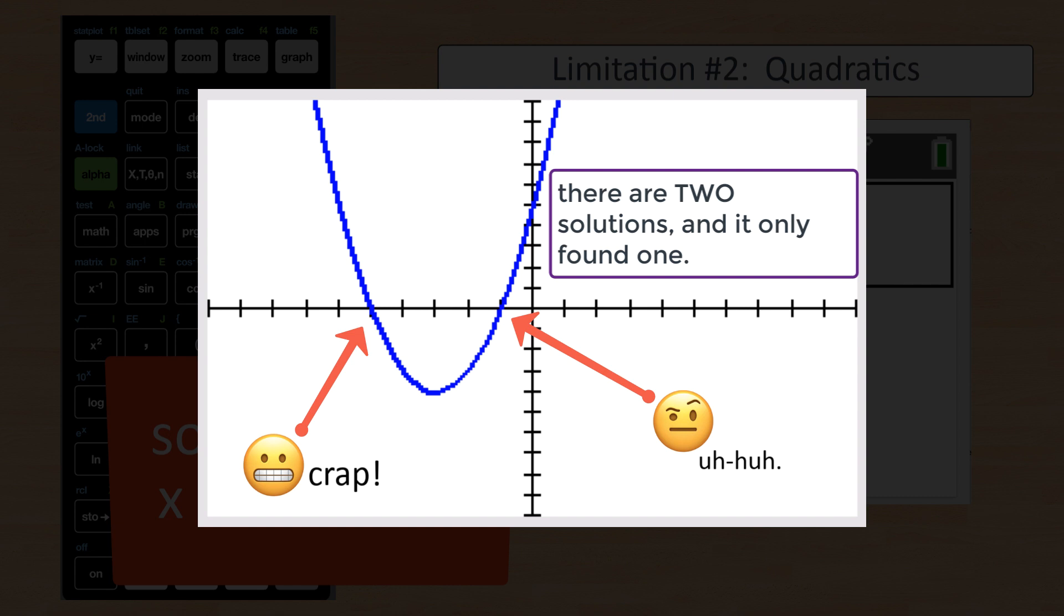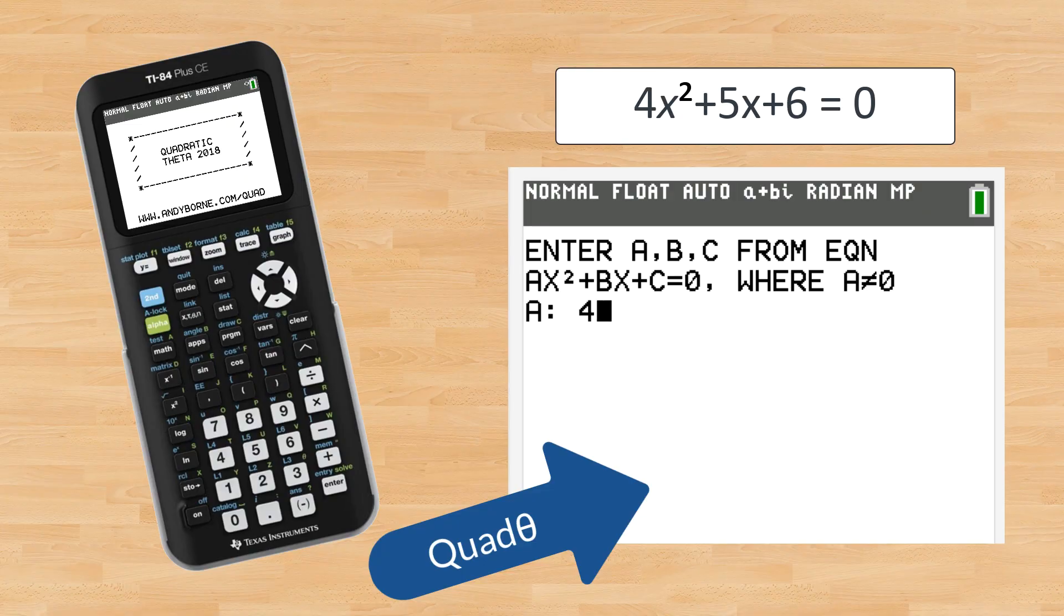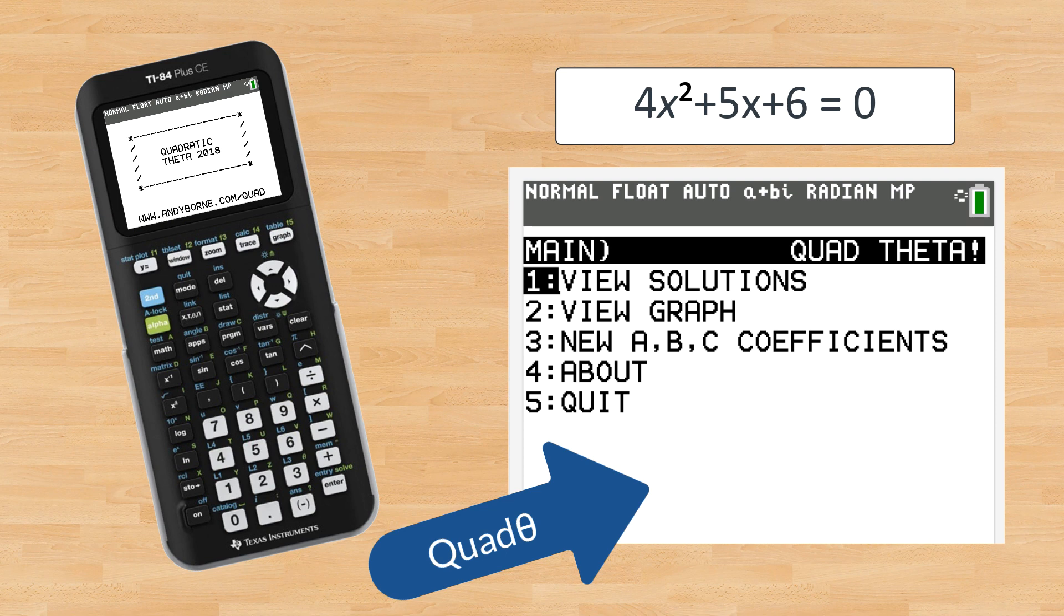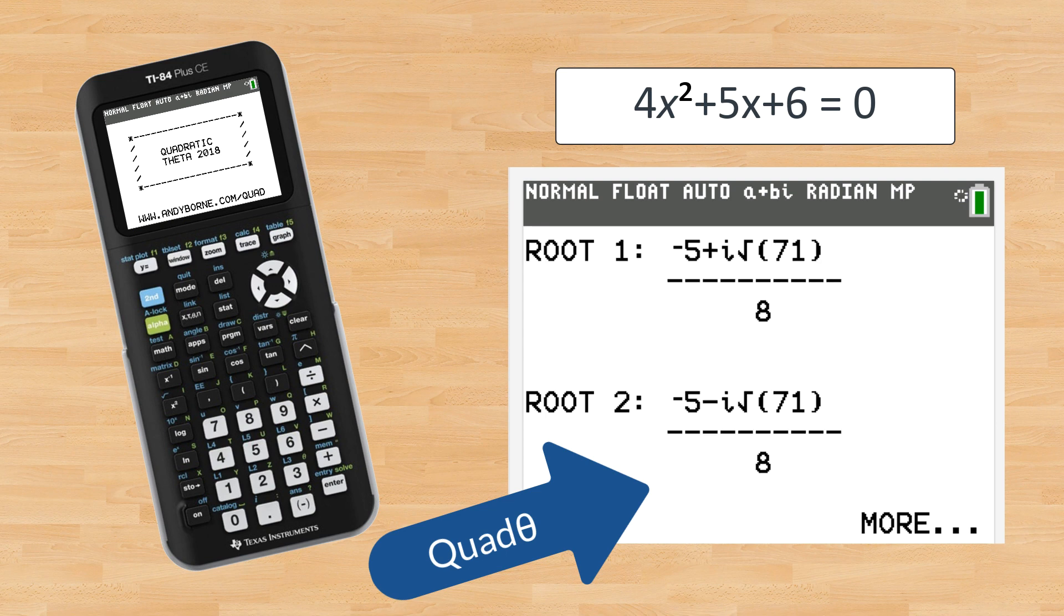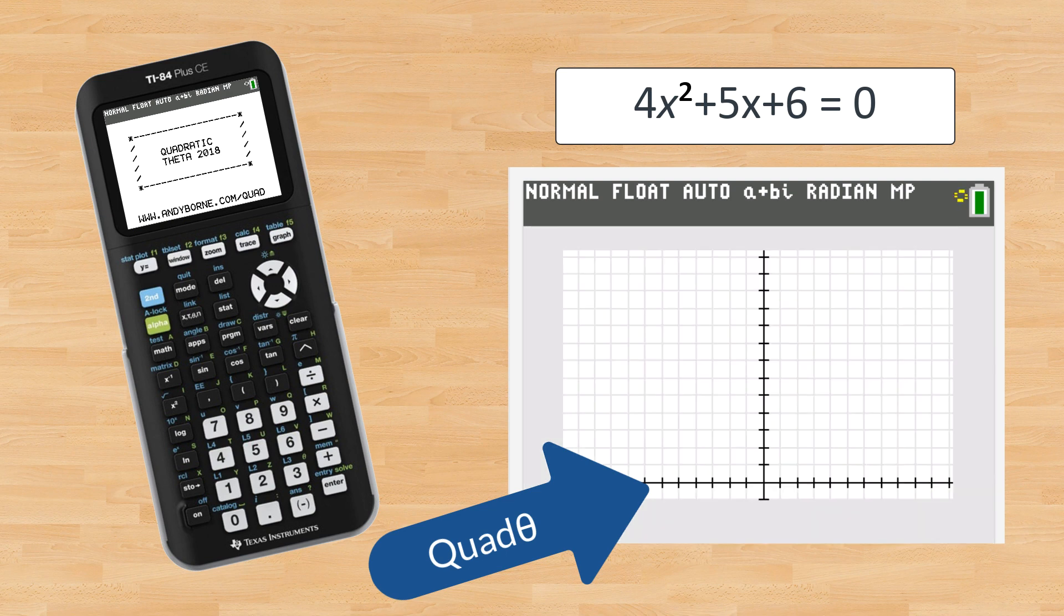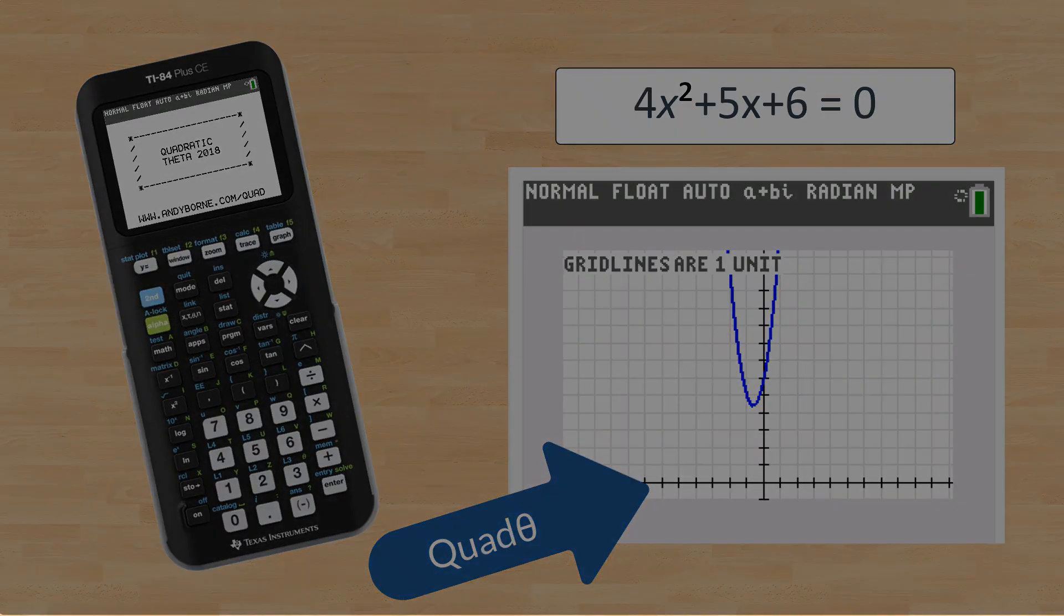Which is why I'm going to shamelessly plug a cool program you can install on your calculator called Quad Theta, and it will give you both answers and can do it in exact form instead of whack-a-doodle decimal form.